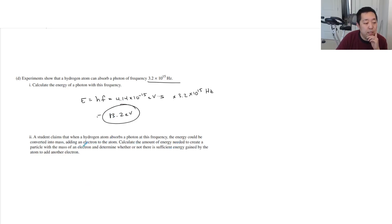The student claims that the hydrogen atom absorbed a photon of this frequency. The energy could convert into mass, adding an electron to the atom. Calculate the amount of energy you need to create a particle with a mass of the electron to determine whether there's sufficient energy gained by the atom to add another electron. So the rest energy of a mass, MC squared, you would do mass of an electron, which is 9.11 times 10 to the minus 31, times 3.0 times 10 to the 8th meters per second squared. That's 8.2 times 10 to the minus 14 joules. And then I want to convert that to eV, so I divide it by 1.6 times 10 to the minus 19. I get 5.5 times 10 to the 5 eV. So not nearly enough energy. Not enough energy. That's way too big.